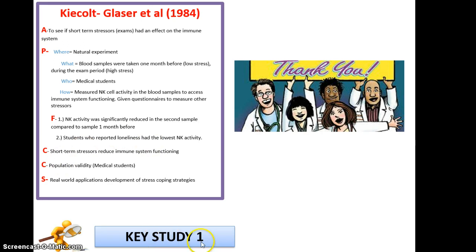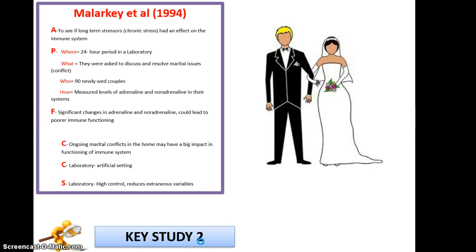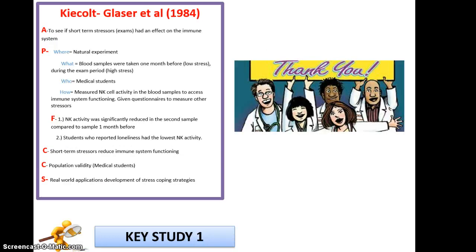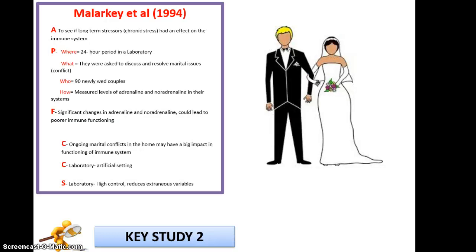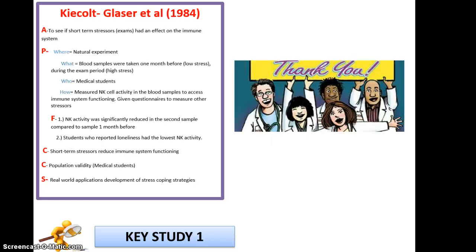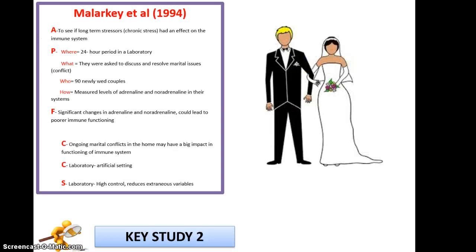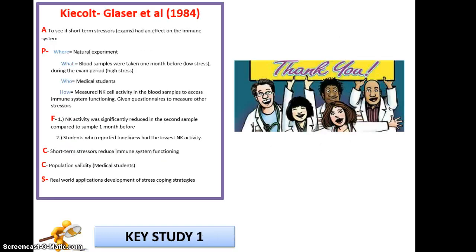Our second key study is Malarkey and the newly-wedded couples. A trick I'll share: for key study one learn aims, procedures, findings, conclusions, criticisms and strengths in full. For the second study you can get away with knowing just the findings and conclusions. You can get away with knowing one in full and one partially, because we haven't all got the same memory capacity.